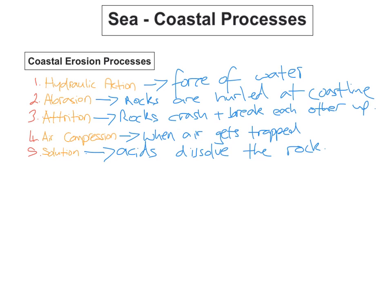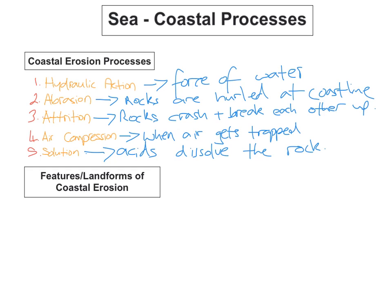You need to know these five processes. In the exam you'll be asked to explain a feature or landform formed because of coastal erosion. When you get that, you must pick a feature or landform and explain it — and you must use the coastal erosion processes. Some students explain how a cliff, bay or headland is formed but don't use the erosion processes. You must use them when explaining how a coastal feature or landform was formed.